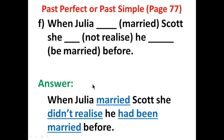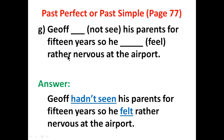When you make a negative expression in past simple tense, you use 'didn't' as a helping verb and then a simple verb — not a past verb. You cannot say 'didn't realized' — that is wrong. So: 'When Julia married Scott, she didn't realize he had been married' — 'had been married' is the passive form of past perfect tense.